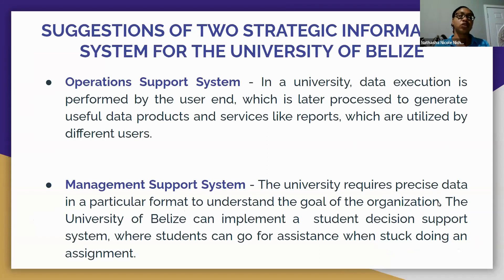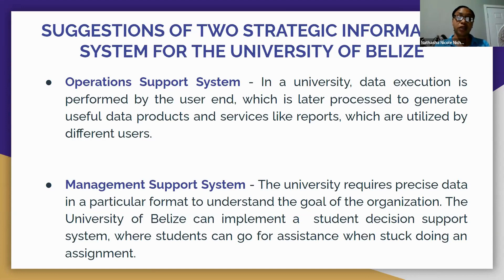Suggestions of two strategic information systems for the University of Belize. First, an Operations Support System: in a university, data execution is performed by the user and processed to generate useful data products and services like reports utilized by different users. Second, a Management Support System: the university requires precise data in a particular format to understand the organization's goals. UB can implement a student decision support system where students can go for assistance when stuck on assignments.